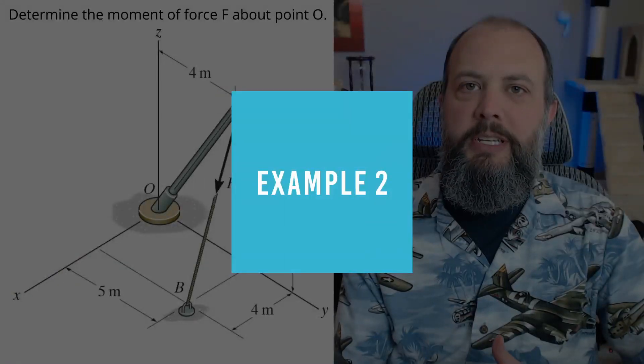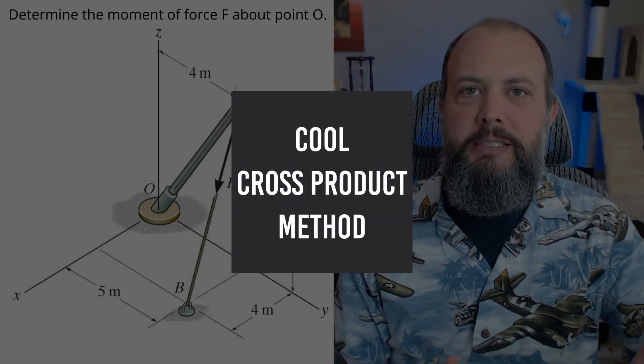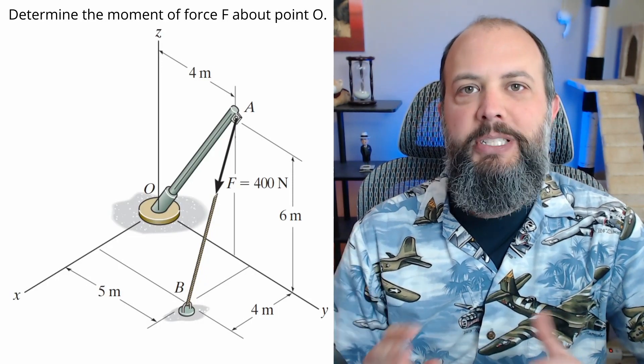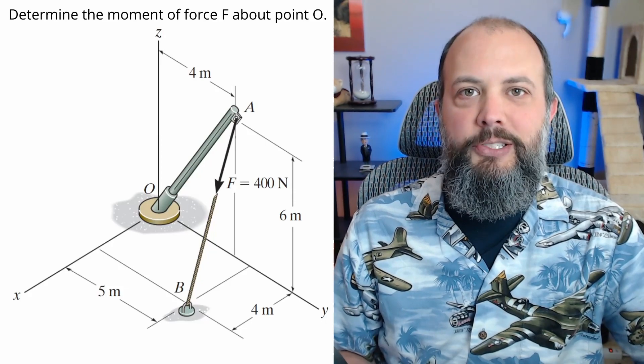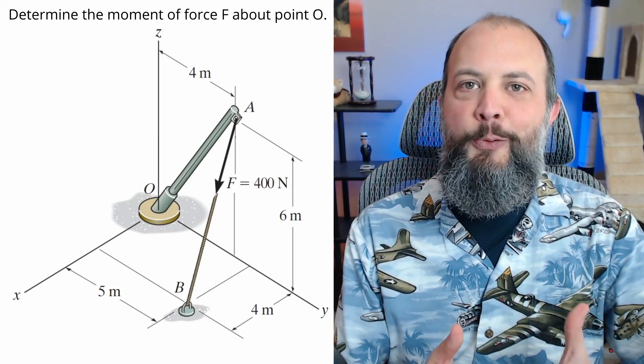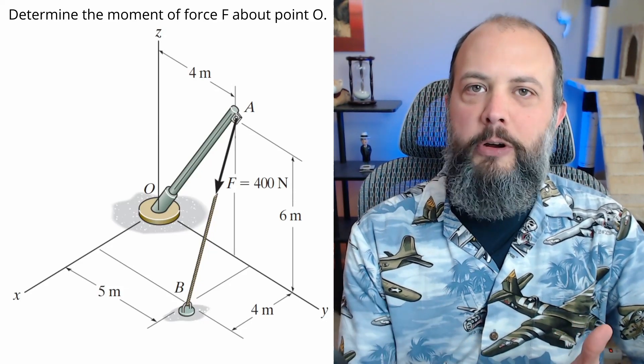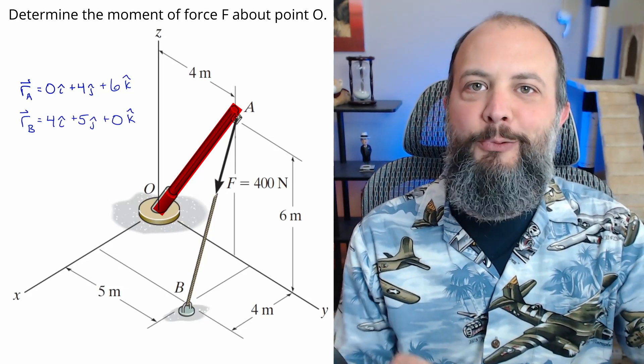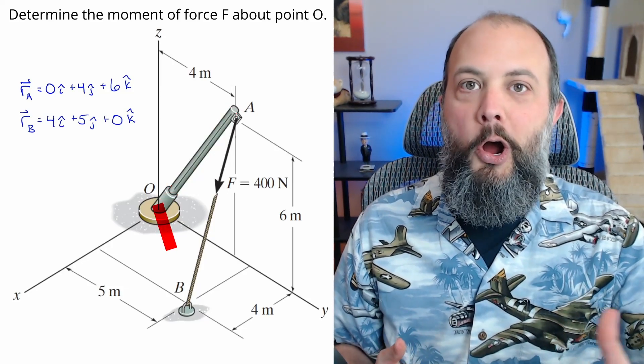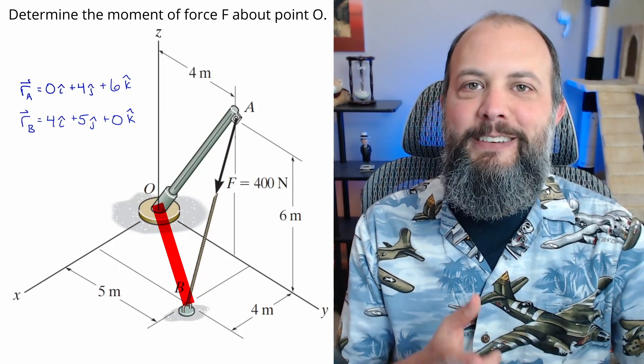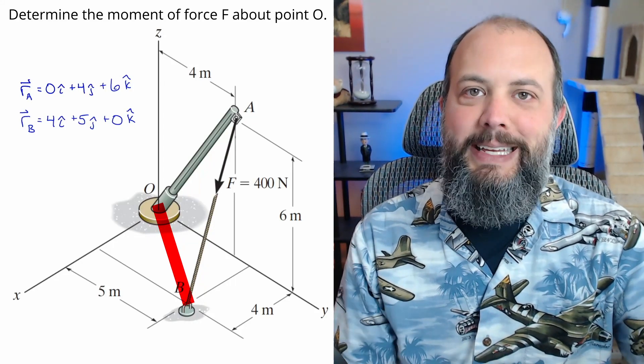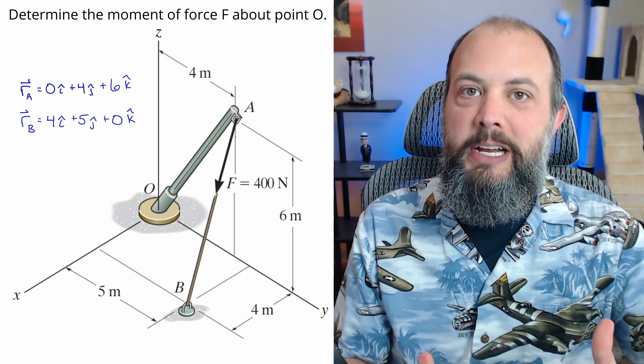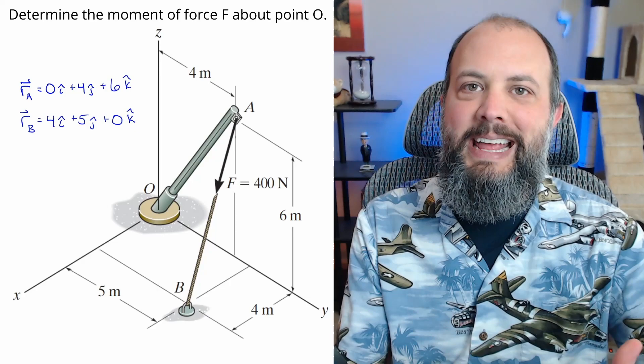For problem two, I'm going to do this with just the cool method cross product. But for finding the position vector, I'm going to show you that there's actually two different position vectors you can use, and they're both going to give you the same answer. The position vector you choose can be anywhere along the line of action of the force. You can use either r_a, which goes from point O to A, which is where the force is applied, or r_b, which is still on the line of action of the force from the origin to point B. And these are both going to give the same answer.